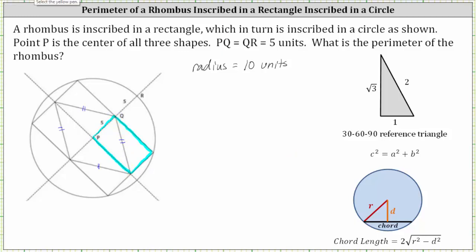But more importantly, notice how the other diagonal is actually the radius of the circle, which we know has a length of 10 units.